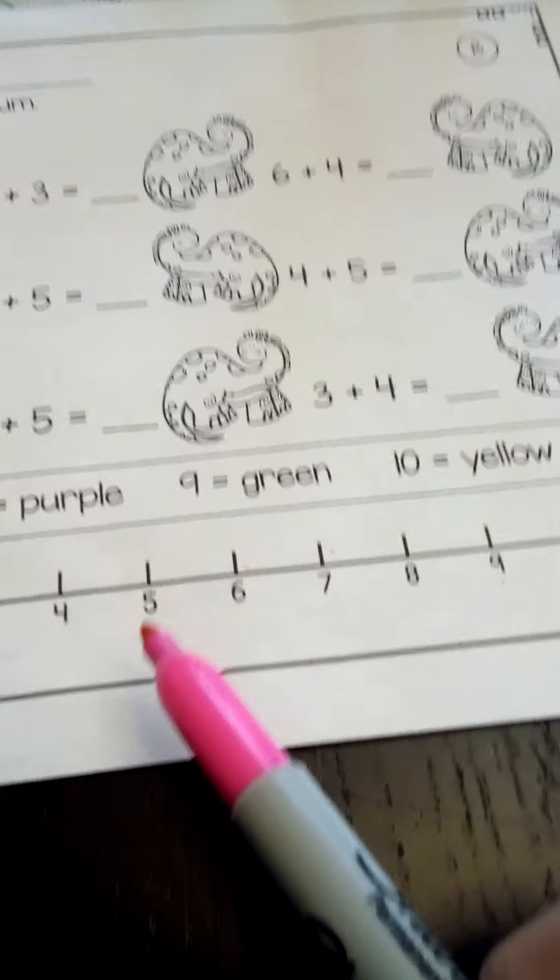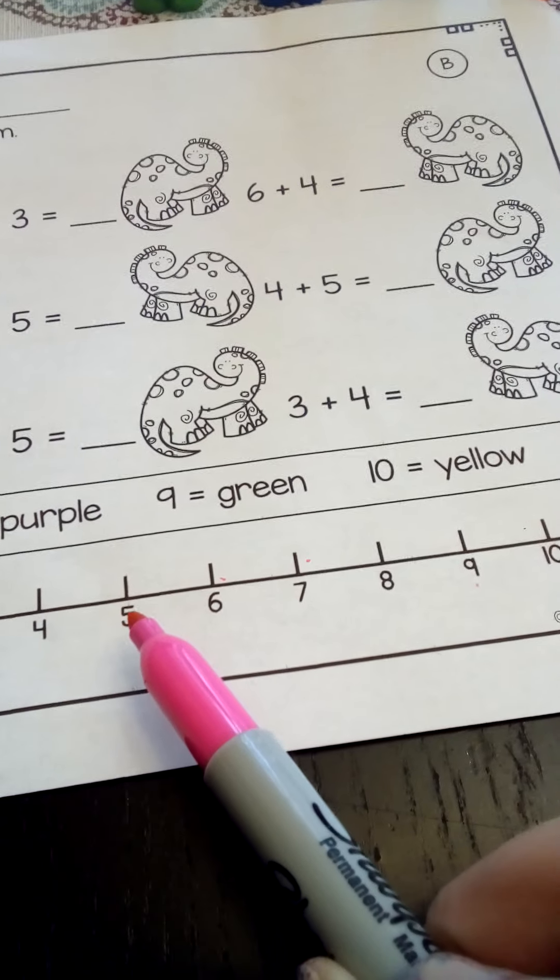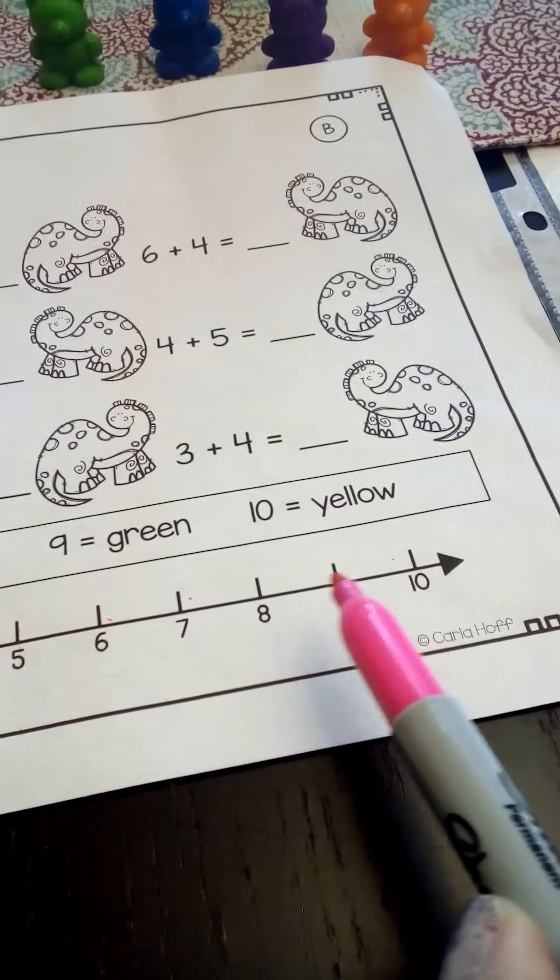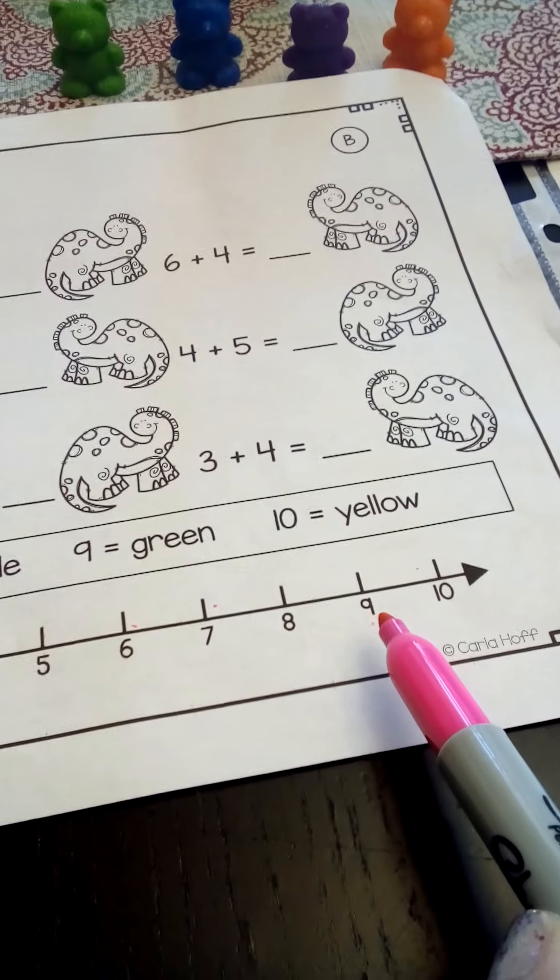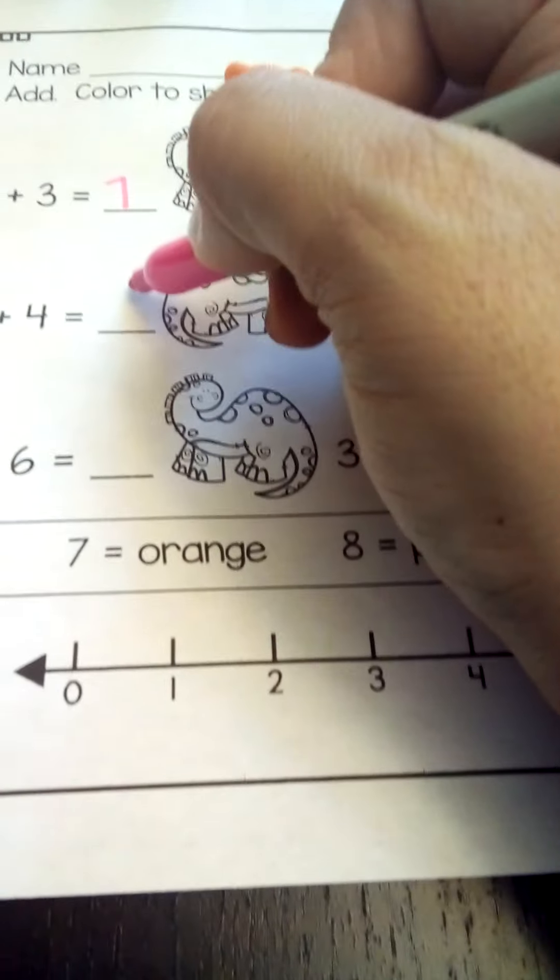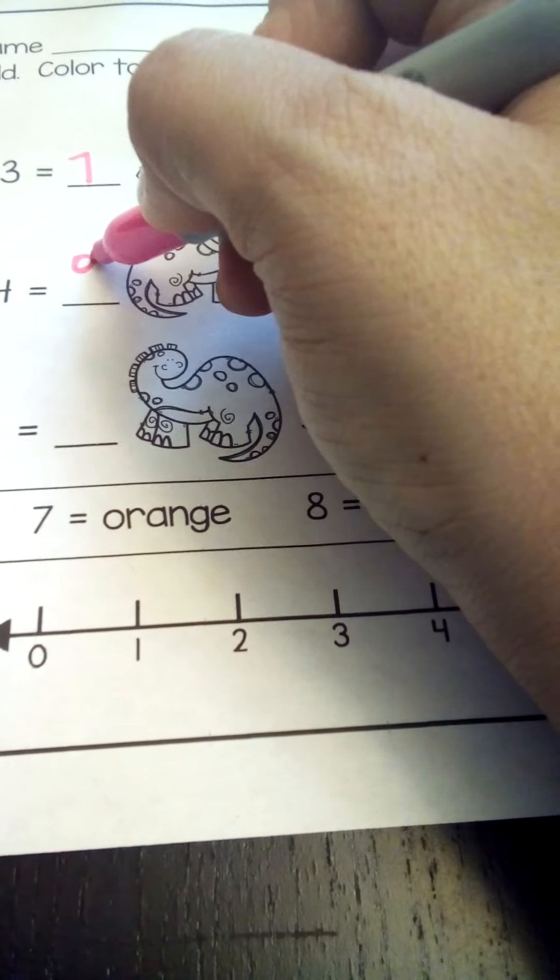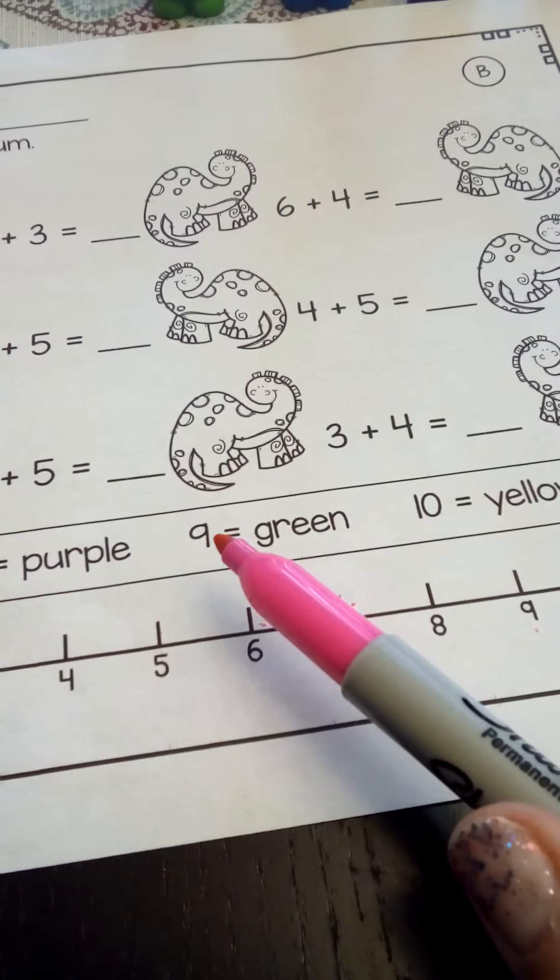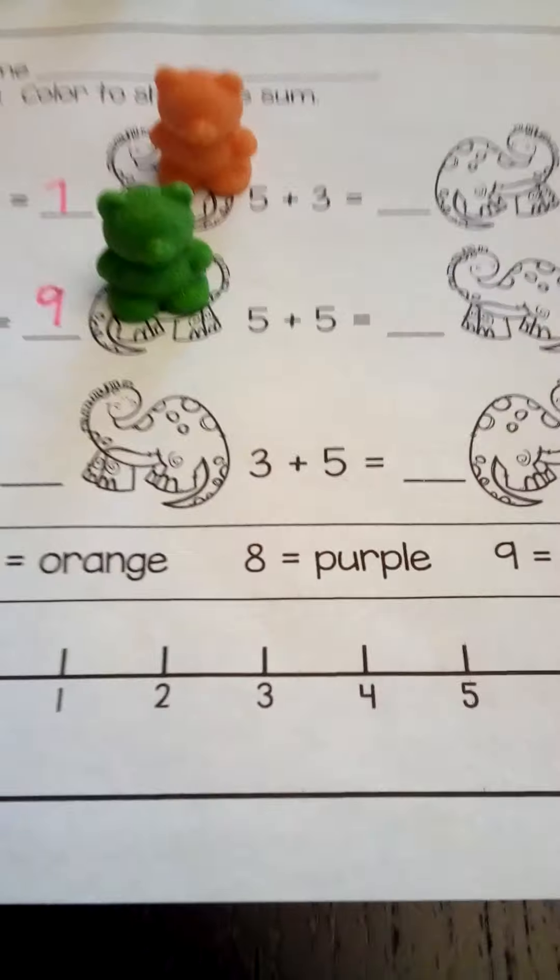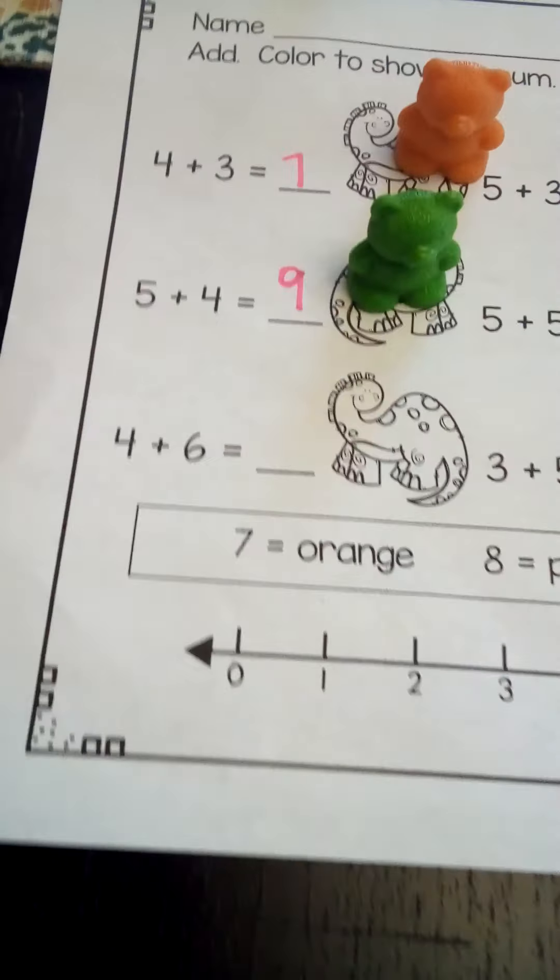So we're going to start at five and take four jumps. One, two, three, four. And we got nine again. So that's our correct answer. So let's write nine. Okay. And what number? There he is. Nine is what color? Green. So you're going to go back and color that little dinosaur green.